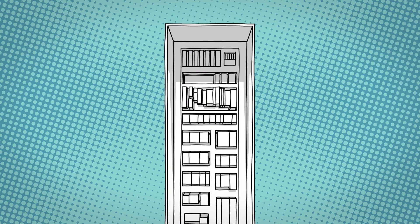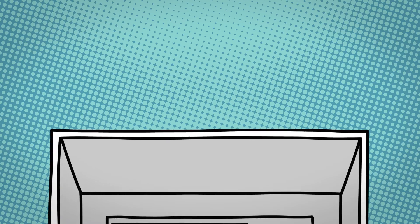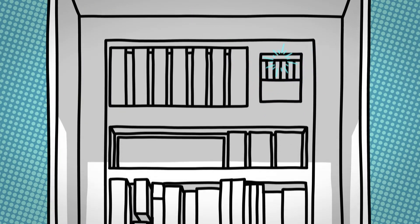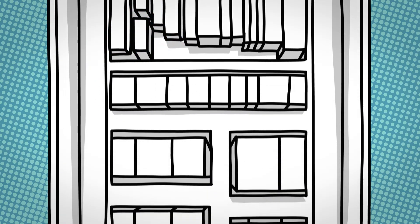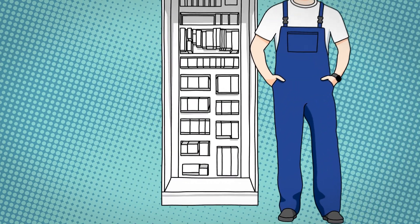Modern control cabinets contain hundreds of different devices and components along with the corresponding wiring. In order to get a good overview, clear, easily visible, and permanent identification is essential. It increases safety and simplifies workflows.